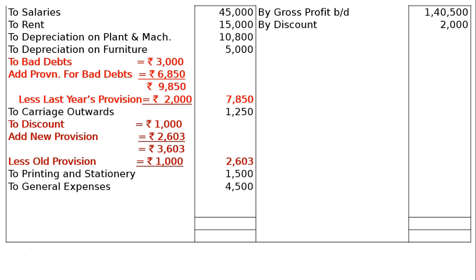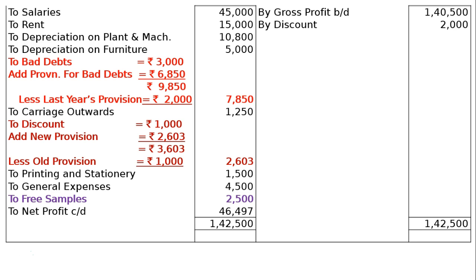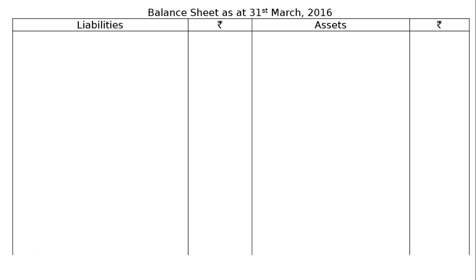To general expenses rupees 4,500. To free samples — deducted from purchases and shown here as goods distributed for advertisement. Total the credit side: rupees 1,42,500. Show it on the debit side, find out the difference — net profit carried out is rupees 46,497. Now come down to the balance sheet as at 31st March 2016.